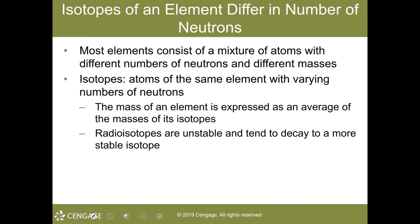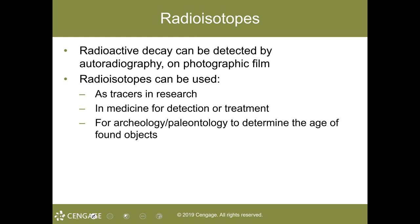Getting to isotopes: isotopes of the same element have the same number of protons and electrons; however, the number of neutrons varies. Isotopes are entirely important — not just for the sake of the lecture, but they're essentially important in medicine. They can be used not just for treatment, but also as a tracer — to trace something throughout an experiment or even to trace something throughout the body.